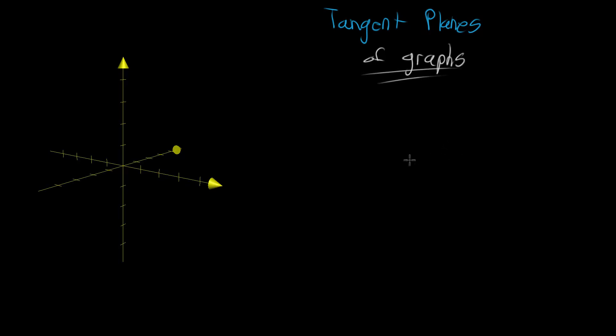So in the single variable world, a common problem that people like to ask in calculus is you have some sort of curve and you want to find at a given point what the tangent line to that curve is. And you'll find the equation for that tangent line and this gives you various information, let's say you wanted to approximate the function around that point and it turns out to be a nice simple approximation.